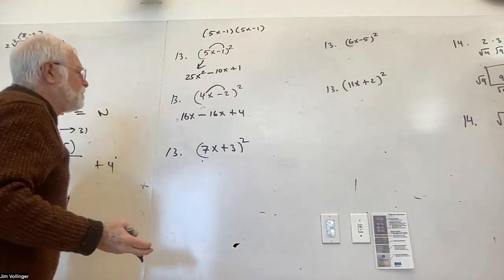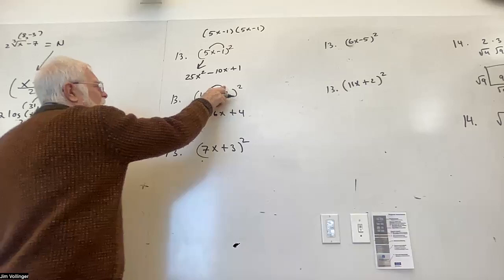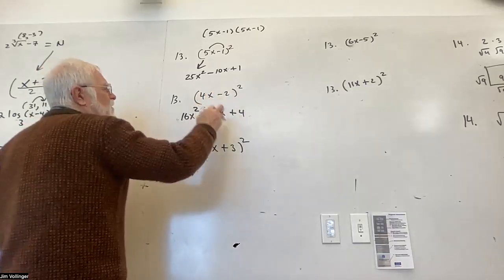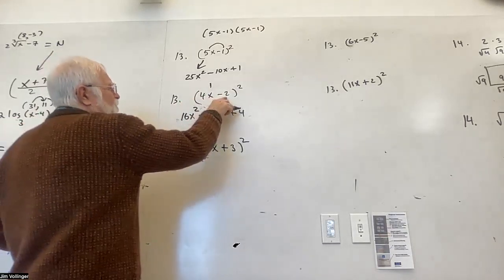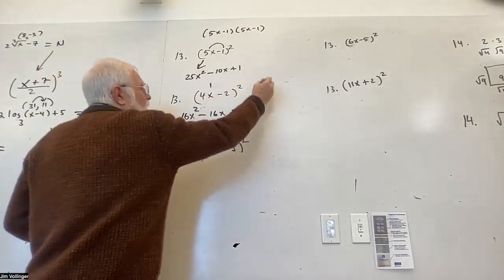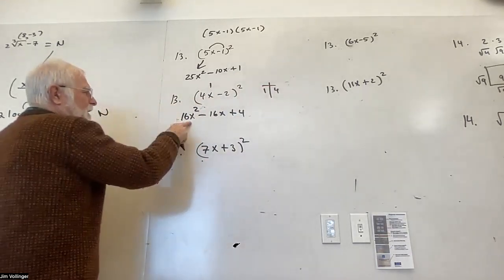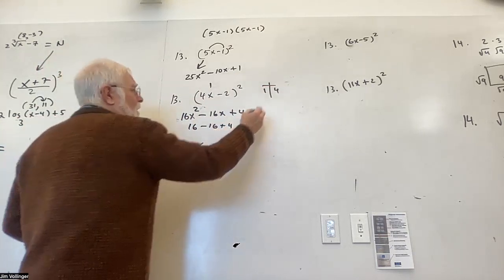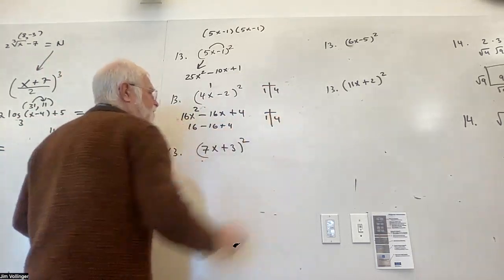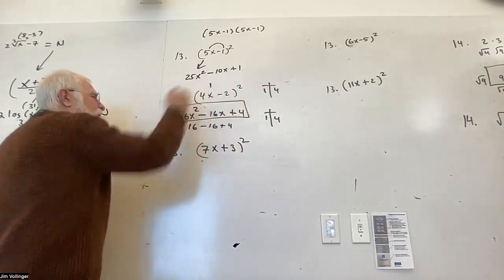What would be a nice number to plug in? I almost forgot to write the square. What would be a nice number to plug in to see if these calculations really are the same? How about let x equal 1? Then 4 minus 2 is 2, and 2 squared is 4. So here, a 1 gets us 4. Let's put a 1 in. 16 minus 16 plus 4. Oh, a 1 gets us 4. Yeah, they may be the same calculation, just expressed differently.